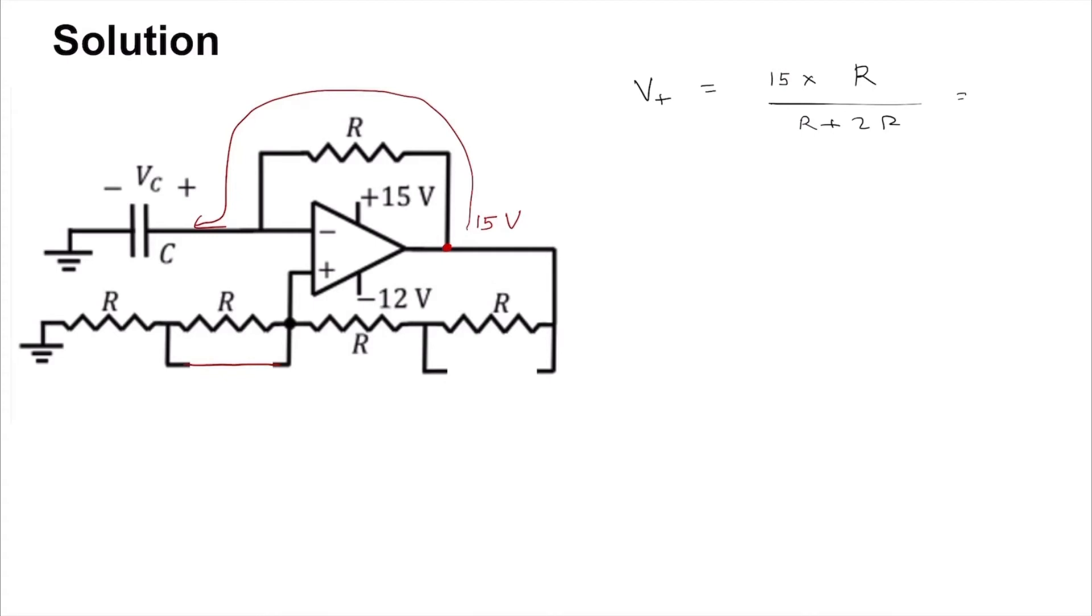This is of course 5 volt. And so the capacitor VC will charge up to 5 volt before the output flips from 15 volt to minus 12 volt.